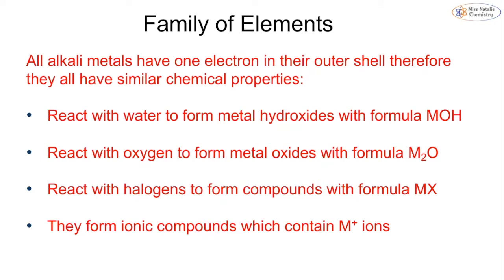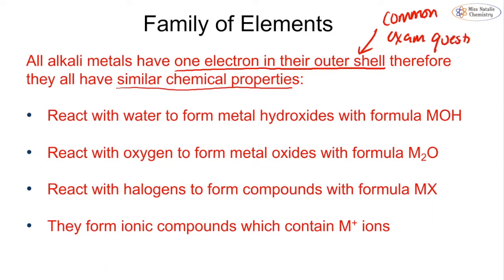When we put these elements into the same group of the periodic table, we link them because they all have similar chemical properties. The reason they have similar chemical properties is that they all have one electron in their outer shell. This is a very common exam question — they will typically ask why a group of elements has similar chemical properties, and the answer is that they have the same number of electrons in their outer shell. These metals react with water to form a metal hydroxide with formula MOH, where M is any alkali metal.